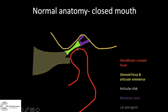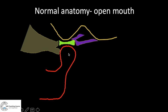On opening the mouth, the mandibular condyle moves anteriorly, but the articular disc still maintains its relation with the mandibular condyle. The retrodiscal tissues get stretched while the lateral pterygoid contracts and pulls it anteriorly. This is the open mouth position, and whenever we do a temporomandibular joint study, it is essential to obtain images in both closed and open mouth for a complete study.